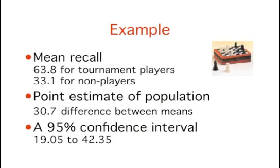In an experiment on memory for chess positions, the mean recall for tournament players was 63.8, and the mean for non-players was 33.1. Therefore, a point estimate of the difference between population means is 30.7. The 95% confidence interval on the difference between means extends from 19.05 to 42.35. You will see how to compute this kind of interval later in this chapter.